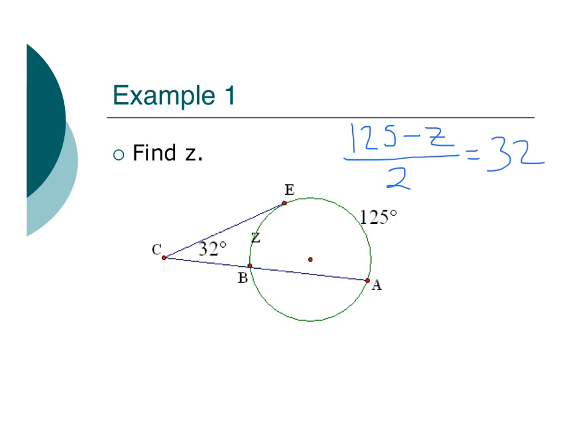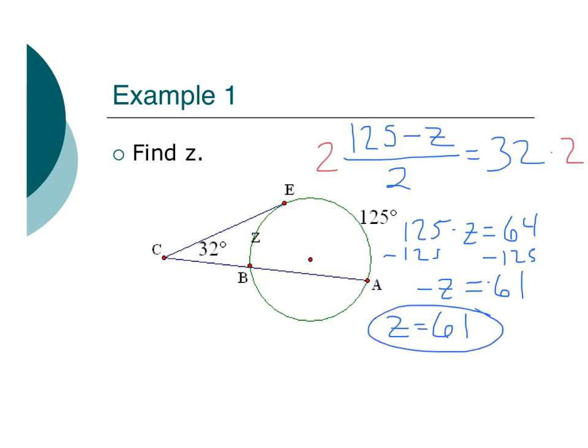Now I just need to solve it. So I'm going to multiply both sides by 2. I'm going to have 125 minus z equals 64. Then I'm going to subtract 125. Now I'm going to have negative z equals negative 61. So I'm just going to have z equals 61. Bada boom, bada bing. We're good to go. Not too bad, right?